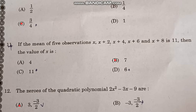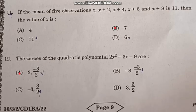Question number 11: If the mean of five observations X, X plus 2, X plus 4, X plus 6, and X plus 8 is 11, then the value of X is correct answer option B, 7.